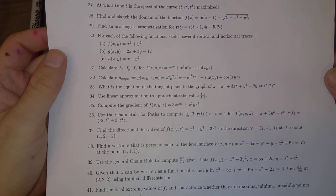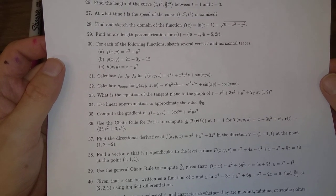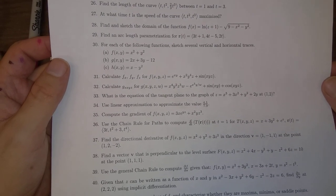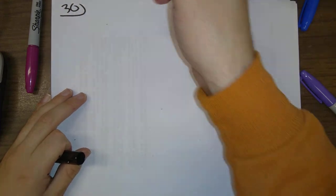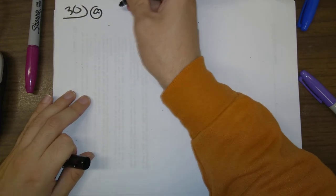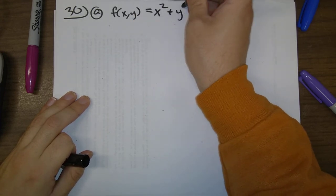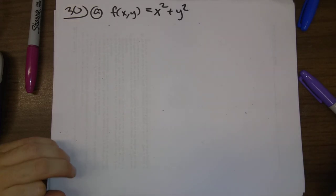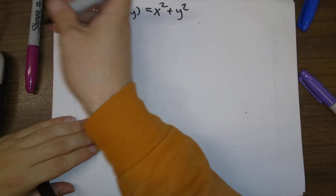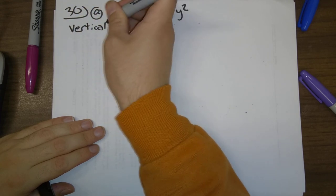Problem 30 is a 14.1 problem where we sketch vertical and horizontal traces. For part A, f of x, y equals x squared plus y squared. The directions are a bit vague, so let's do vertical traces first.